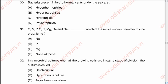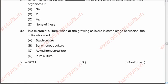Question 32: In a microbial culture, when all the growing cells are in the same stage of division, the culture is called A batch culture, B synchronous culture, C asynchronous culture, D pure culture. The correct option is B, synchronous culture.